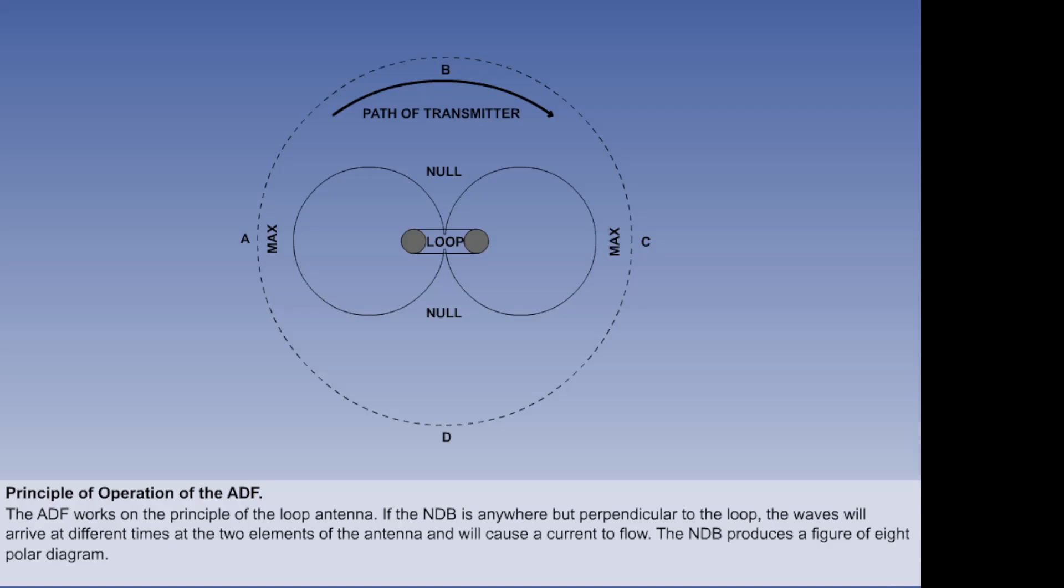A figure of eight polar diagram of signal strength can be plotted as the antenna is turned or the transmitter moves around the antenna. How is this figure of eight pattern constructed?